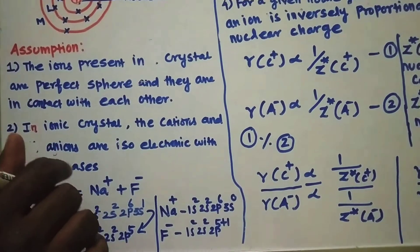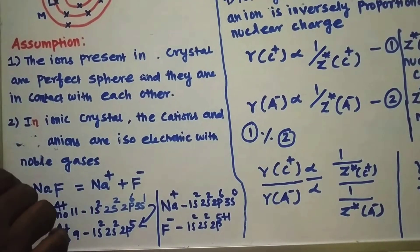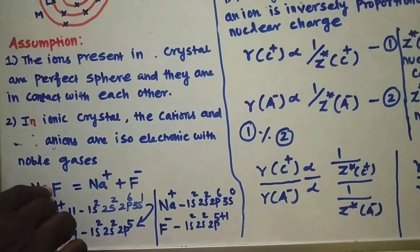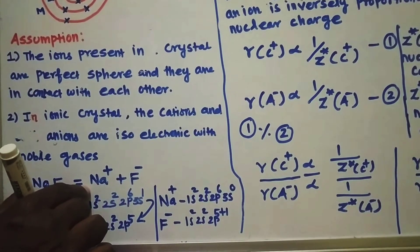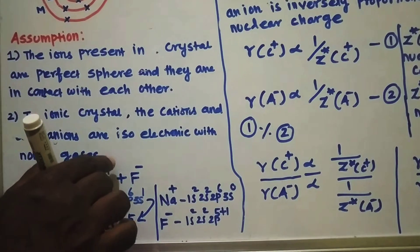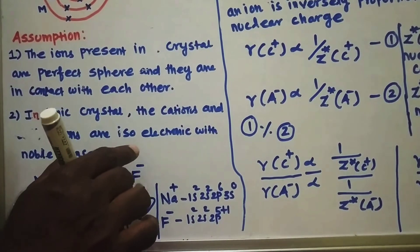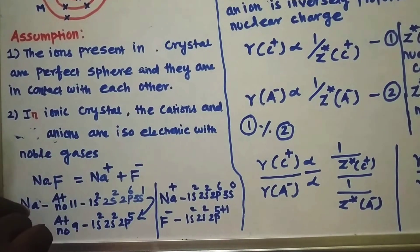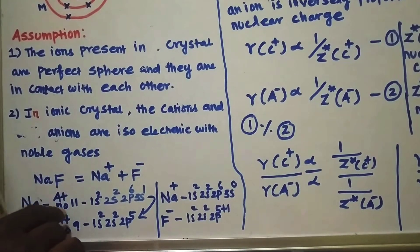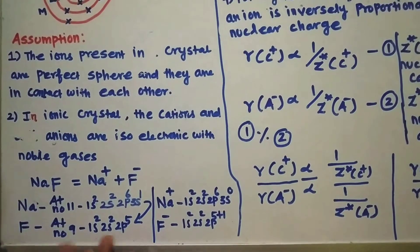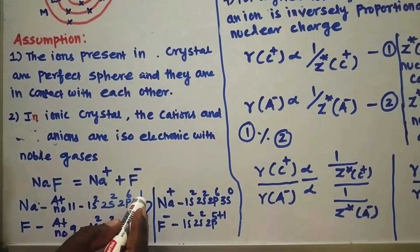Now let us consider the crystal of sodium fluoride. Its formula is NaF. It forms Na⁺ and F⁻ — that is, the sodium cation and the fluoride ion. Now let us consider the sodium ion: its atomic number is equal to 11. Its electronic configuration is 1s², 2s², 2p⁶, 3s¹.